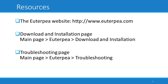On that website, from the main page, you can find detailed download and installation instructions by navigating to the Euterpia menu and clicking on Download and Installation. There is also a detailed Troubleshooting page that you can get to, again from the Euterpia menu, and clicking on Troubleshooting. If your installation doesn't go smoothly and the steps shown in this video don't work for you, please check out the Troubleshooting page.